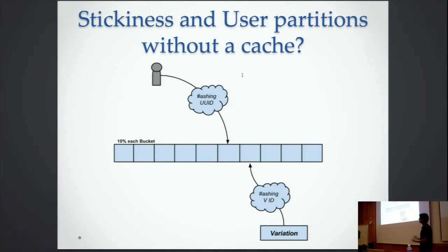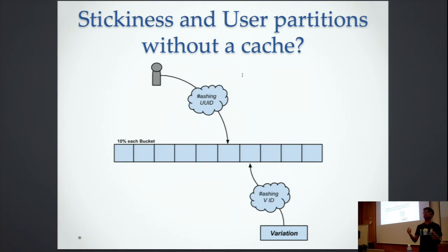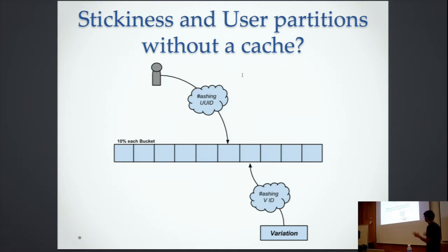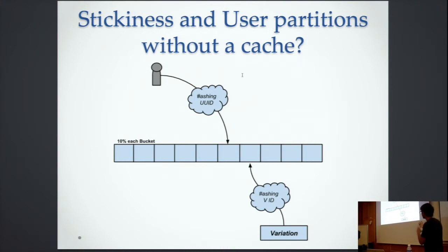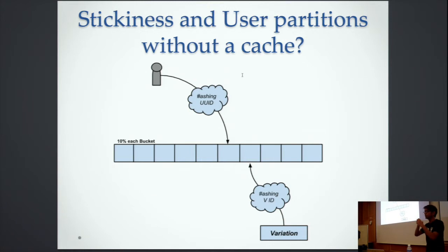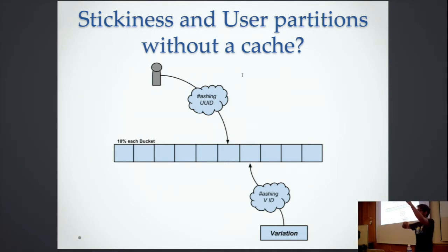We talked about user partitioning and stickiness. Usually the first thing that comes to mind is to keep a cache and mark a user to a particular variation for a certain amount of time. But since we wanted it to be really fast, we came up with a two-way hashing method. We take the UUID and hash the user into a bucket — each bucket is 10%, so there are 10 buckets. UUIDs are random enough that each bucket gets roughly equal users. We also hash the variations to buckets, so a user and a bucket get tied together.